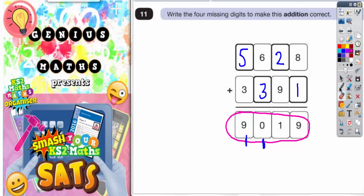So if I do 5,628 and I add on 3,391. So 5,628 and 3,391. If everything I've done up here is correct, I will get back to 9,019. So let's check.